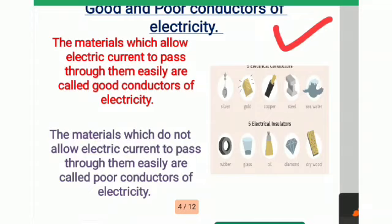The materials which allow electric current to pass through them easily are called good conductors of electricity. For example: silver, gold, copper, steel, and seawater. We have included seawater here, and we will study why in a further slide.